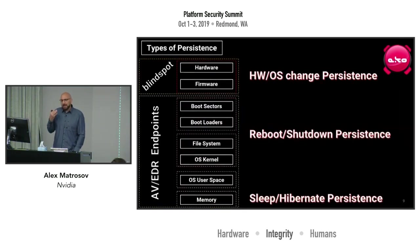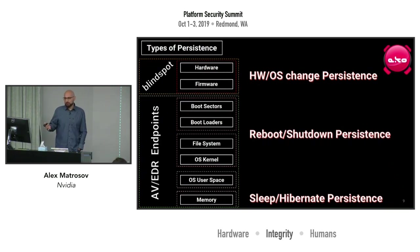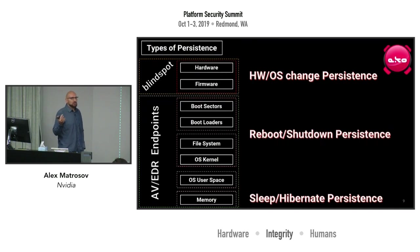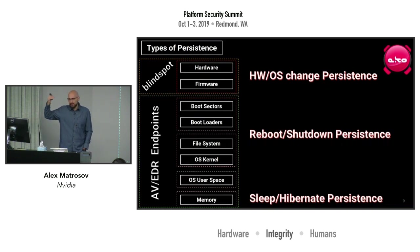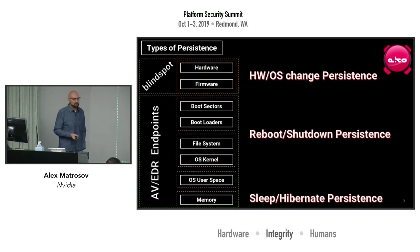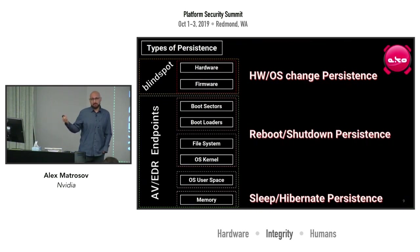What types of persistence do we have? We can persist in hardware and firmware, in the boot process with boot loaders, in the file system, operating system kernel, in memory, and other places. Most security solutions cover the OS level and the boot process. Firmware and hardware are a blind spot for persistence. Some argue modern antiviruses can scan firmware — yes, but it's mostly about integrity, not deep analysis or understanding the threat.